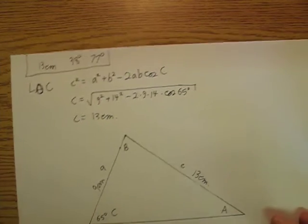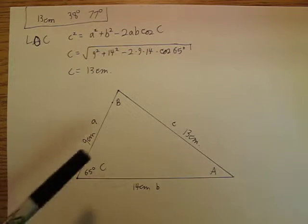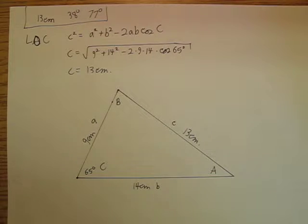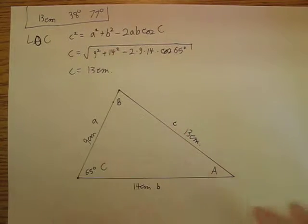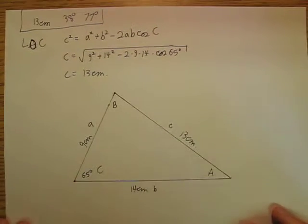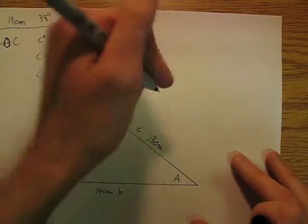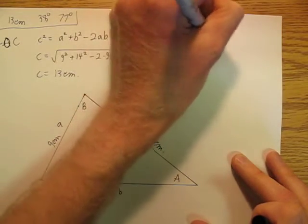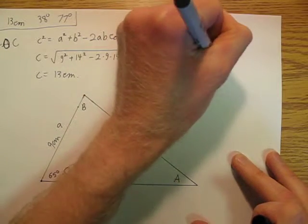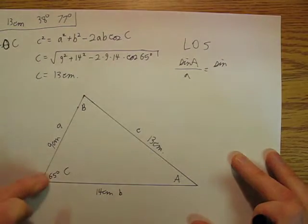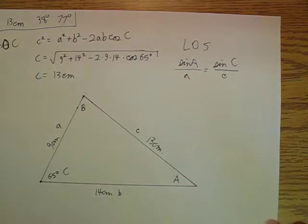Okay. So we use law of cosines and we found that side. Now we're going to use law of sines to find, let's find that angle. Okay. So if we're going to find that angle, we're going to say, I'll pull it over here like this. We're going to say, law of sines, sine a over a equals sine, the angle we have is sine C. So big C over side little c.